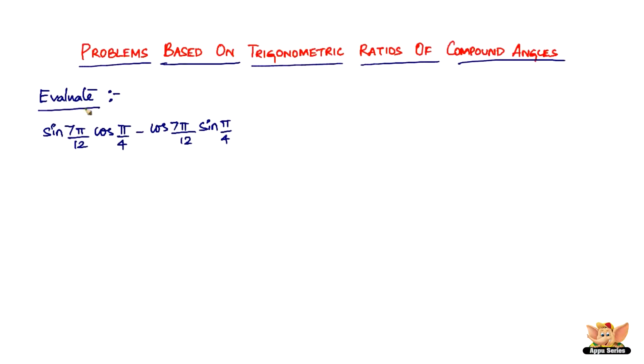All right here, we've got a question which says evaluate sine of 7π by 12 times cos of π by 4 minus cos of 7π by 12 times sine of π by 4.